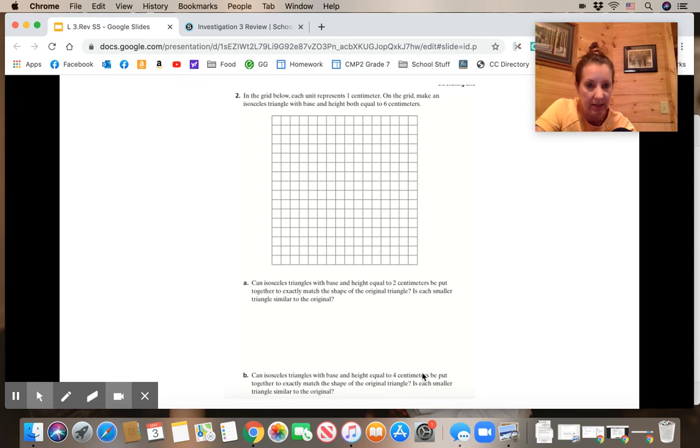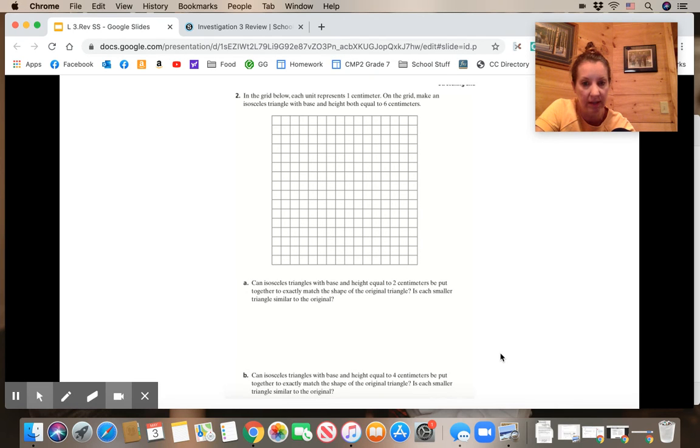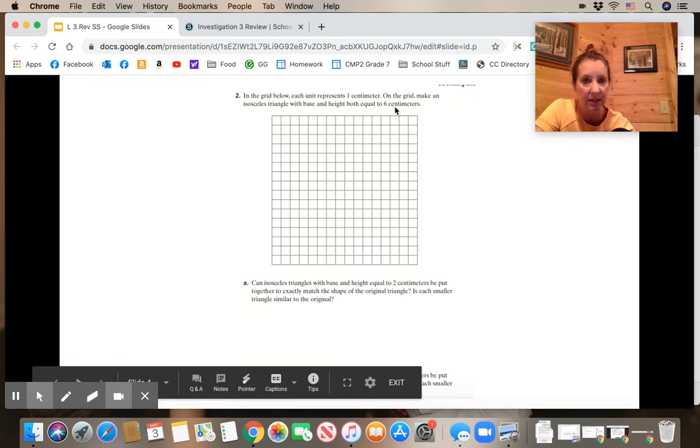B says can isosceles triangles with base and height of 4 be put together to match the original? Is each smaller triangle similar to the original? So up here remember your base and your height was 6.